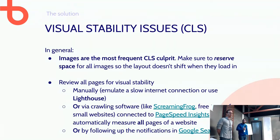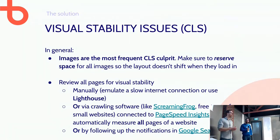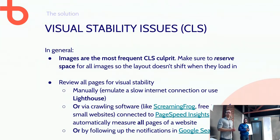You should also review your pages to make sure you don't have CLS issues. You can do this manually by opening Developer Tools, emulating a slow connection, and reloading your page to simulate a slow 3G environment — you'll visually see any CLS issues. You can also do a Lighthouse audit natively in Chrome, or use SEO software like Screaming Frog — which is free for under 500 pages — linked with Google PageSpeed Insights to show CLS scores for all your pages. Or simply use Google Search Console, which will show CLS issues in a separate Core Web Vitals section.